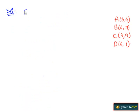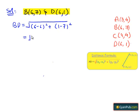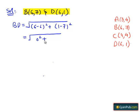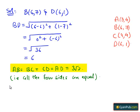Taking the diagonal points B(6, 7) and D(6, 1), by the distance formula we get BD = √((6−6)² + (1−7)²) = √(0² + (−6)²) = √36 = 6. From this we can conclude AB = BC = CD = AD = 3√2, that is all four sides are equal, and also AC = BD = 6, that is the diagonals are equal.